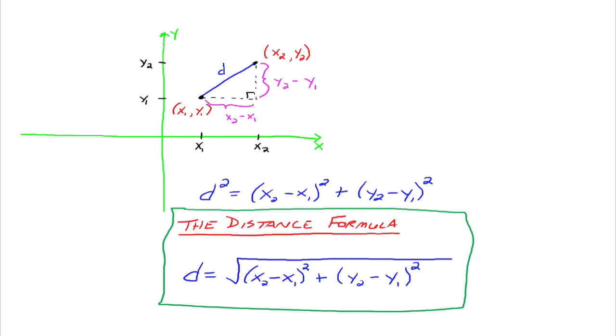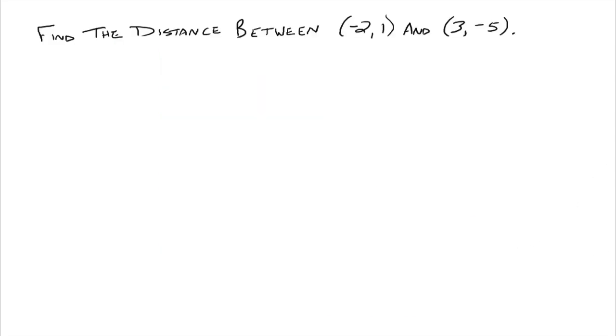The distance formula will help you figure out the distance between two points. So let's look at an example. Find the distance between negative 2, 1 and 3, negative 5. So while you're practicing this at the beginning, it's probably not a bad idea to actually write out the formula. x2 minus x1 squared plus y2 minus y1 squared. So until you remember it, it's probably a good idea just to keep writing it down every time you're going to use it.